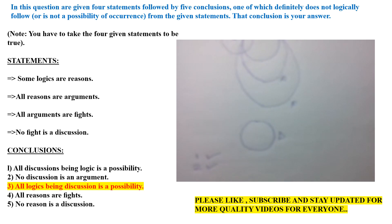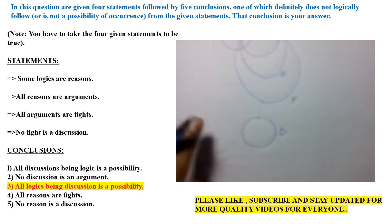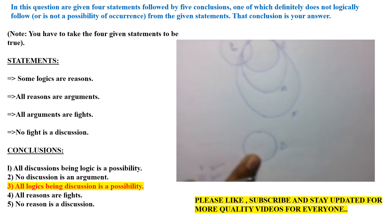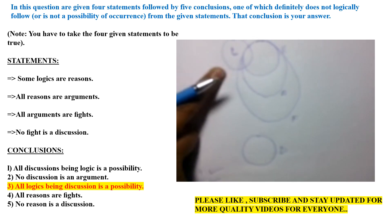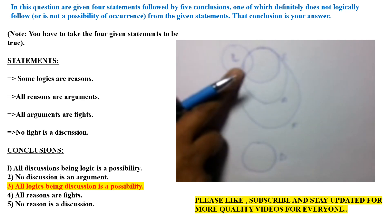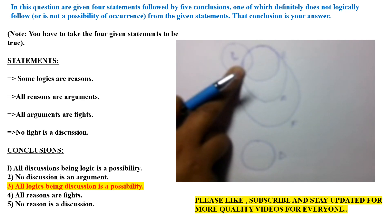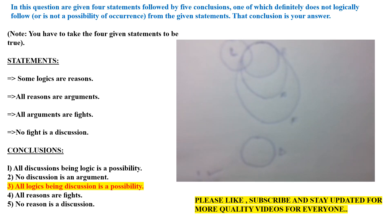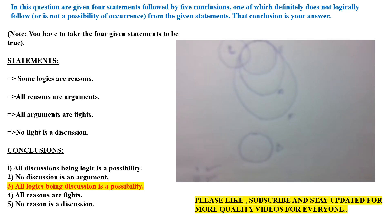The 3rd conclusion is: all logic being discussion is a possibility. All logic being discussion cannot be a possibility. The reason is that within all logic, fight is included, argument is included, and reason is included. And the last statement carefully mentions no fight is a discussion. So the 3rd conclusion is logically incorrect.